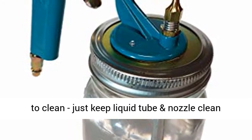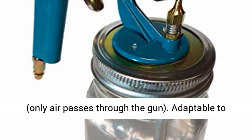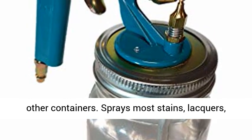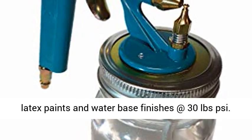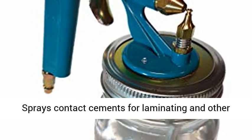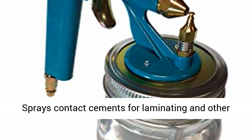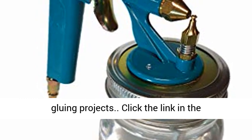Easy to clean. Just keep liquid tube and nozzle clean. Only air passes through the gun. Adaptable to other containers. Sprays most stains, lacquers, latex paints, and water base finishes at 30 psi. Sprays contact cements for laminating and other gluing projects.